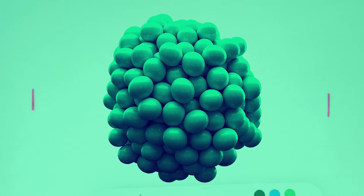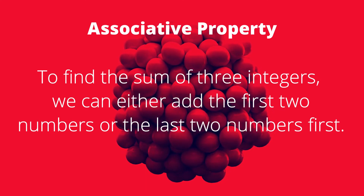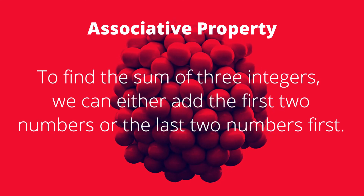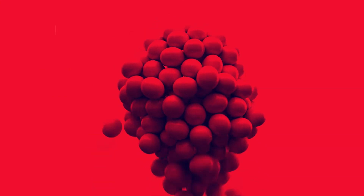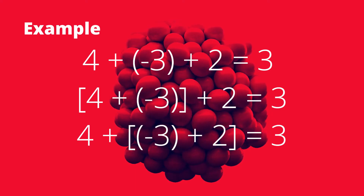So to find the sum of three integers, we can either add the first two numbers first or the last two numbers first. For example, if you have 4 plus (negative 3 plus 2), that is equal to (4 plus negative 3) plus 2, which is also equal to 4 plus (negative 3 plus 2), which equals 3. I will give you more examples after the discussion of the property.